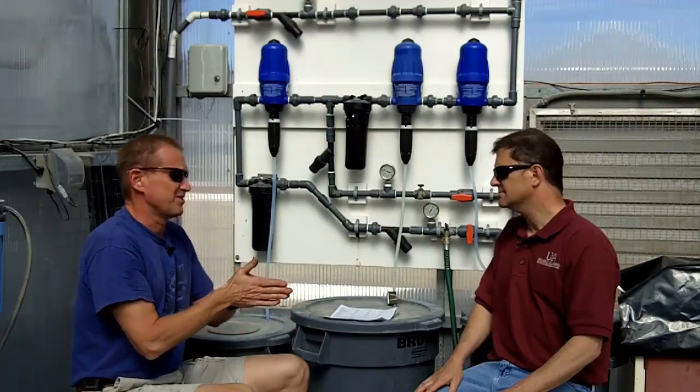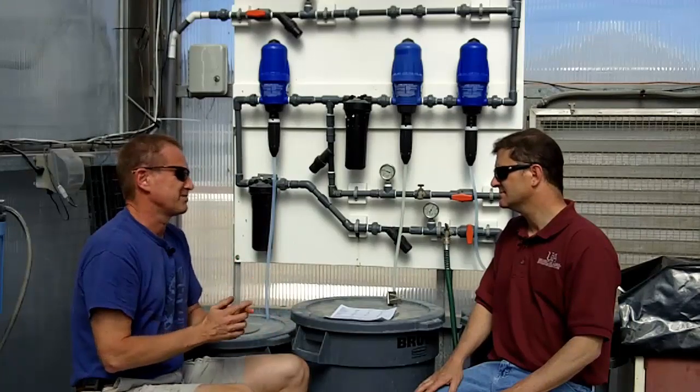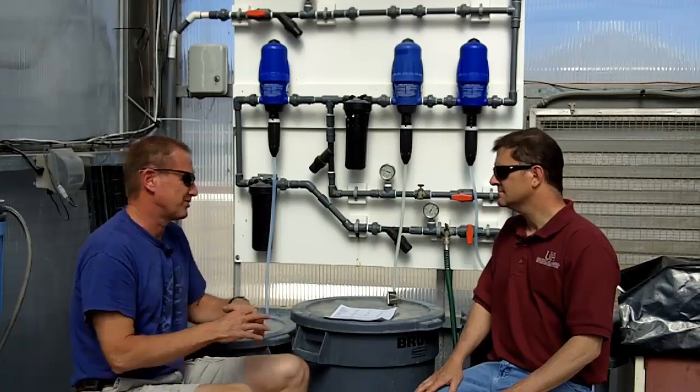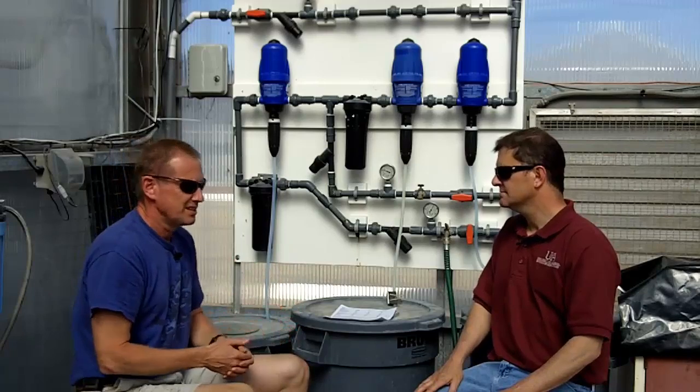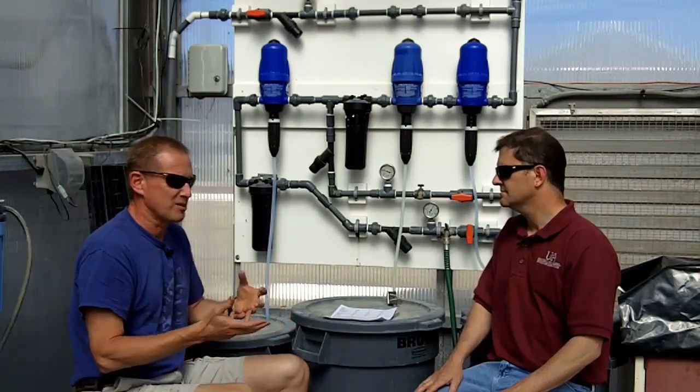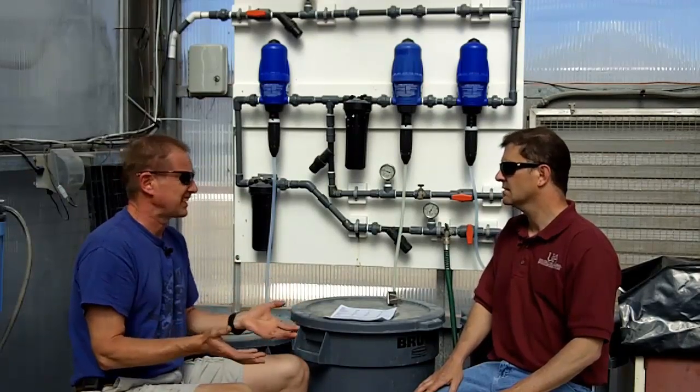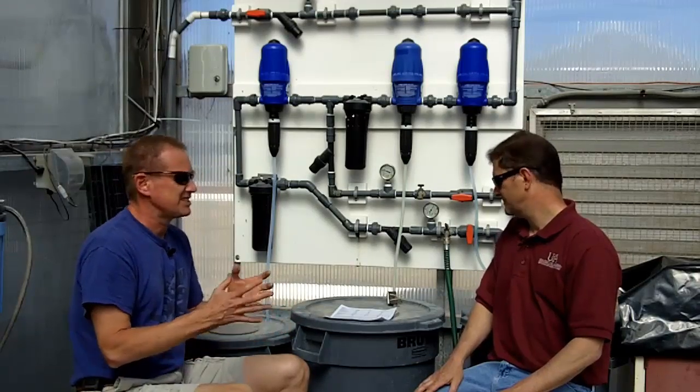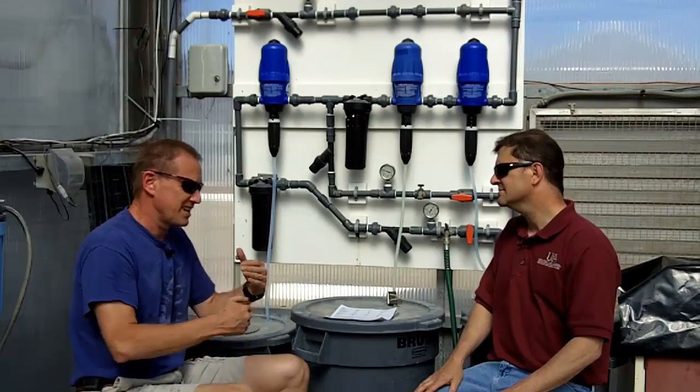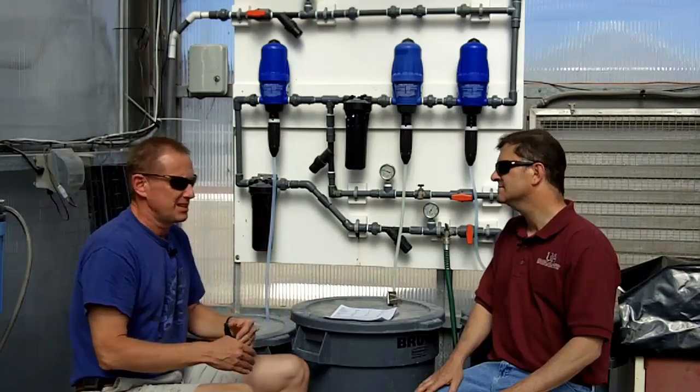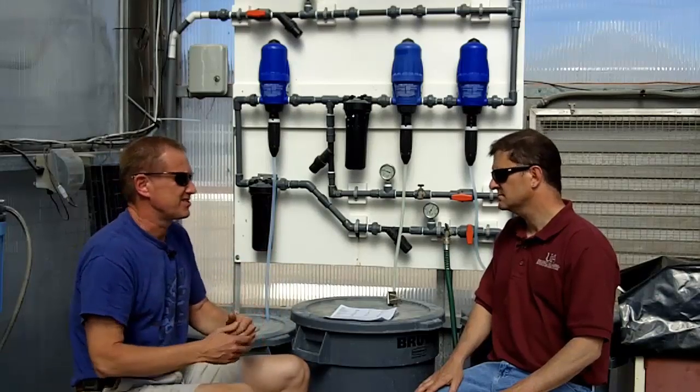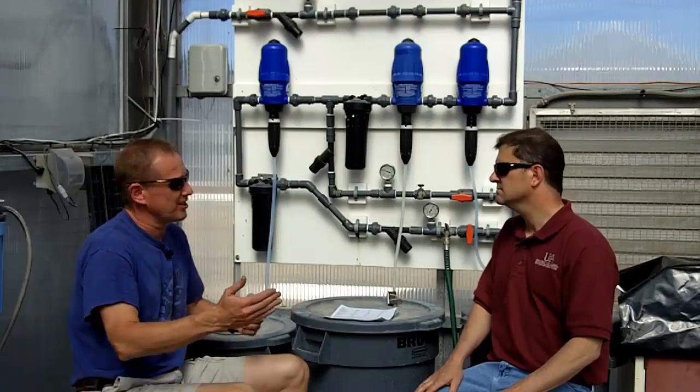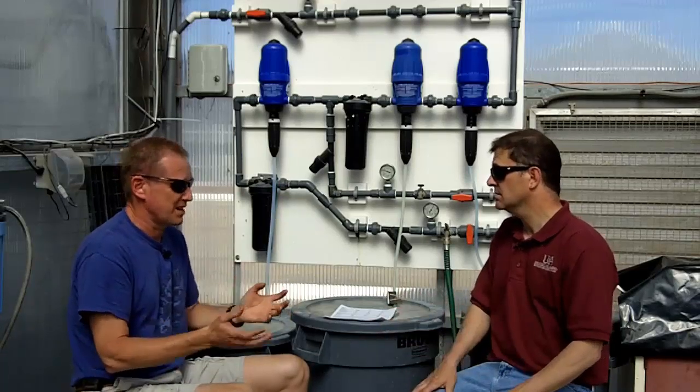Now, what we start with, though, is a water quality analysis because we need to know what's in our water before we start adding things to it. For example, our water has always a minimum of 30 parts per million of calcium, among some other elements. And so, we need to know that so that when we're creating our recipe, we only add as much as we really need so we're not adding too much, just wasting money or causing some imbalance.